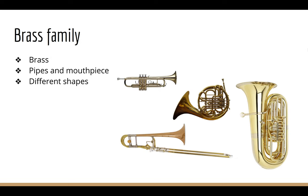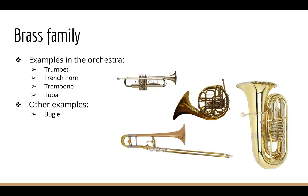Next, let's talk about the brass family. Brass instruments are made out of brass — long brass pipes that make sound when air is blown through the cup-shaped mouthpiece. There are many different shapes, but the most important characteristic is the long brass pipes that snake around the instrument. Orchestra examples include the trumpet, the French horn, the trombone, and the tuba. Other examples include the bugle, which looks similar to a trumpet except it doesn't have the button-like valves.